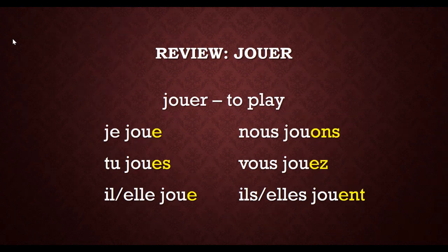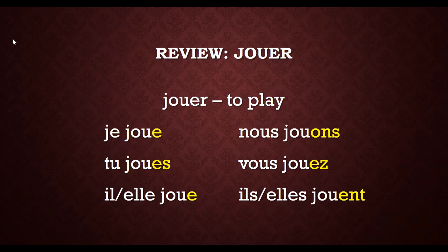We learned jouer way back in lesson five: jouer au foot, jouer au tennis, jouer au baseball, jouer au basket, jouer au volley — a few that we've learned. Now remember, this is a regular -ER verb, so we're going to take off that -ER and we'll be left with the stem J-O-U.